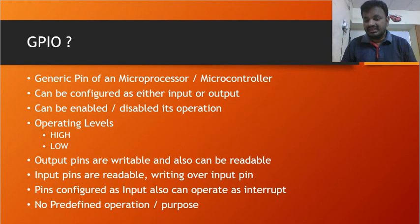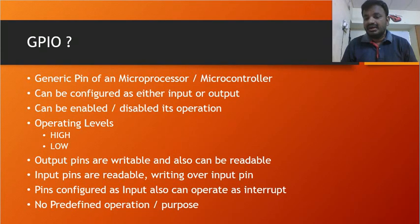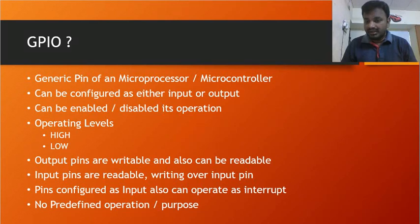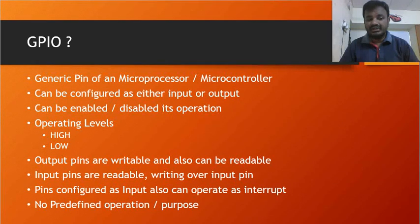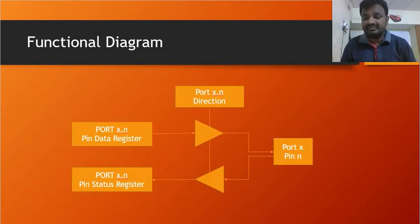GPIO can interface with any IC or interface, but we have to configure it accordingly. For example, if you are connecting an LED, you configure the GPIO as output and update the status to drive the LED. If you are connecting a keypad and want to read keypad information, configure it as input. If more performance is needed, you can also configure it as an interrupt. Moving forward with the functional diagram.